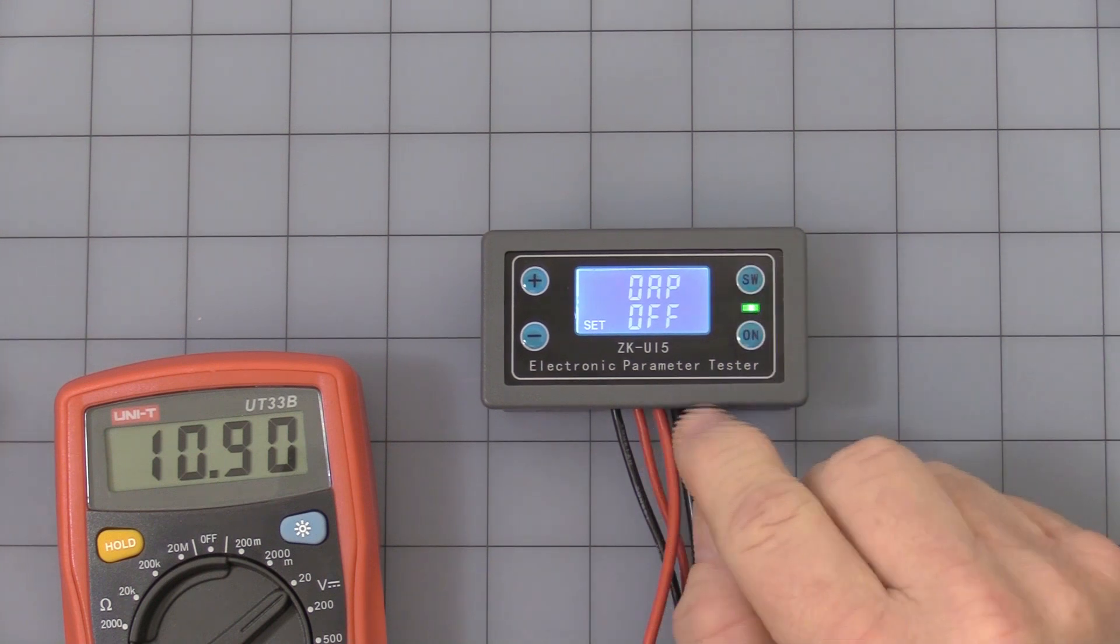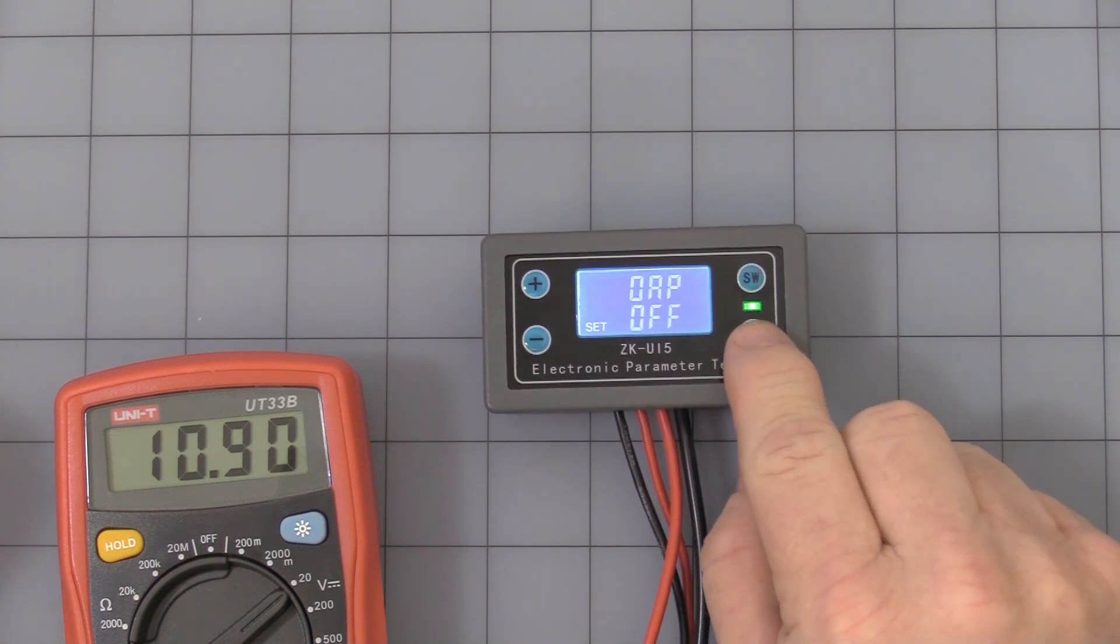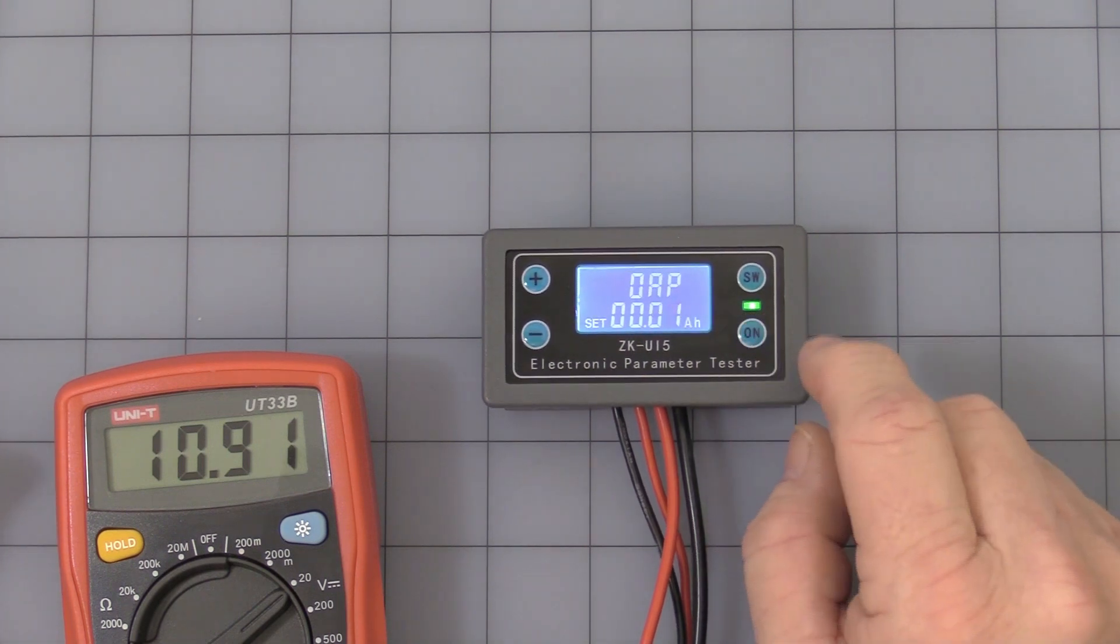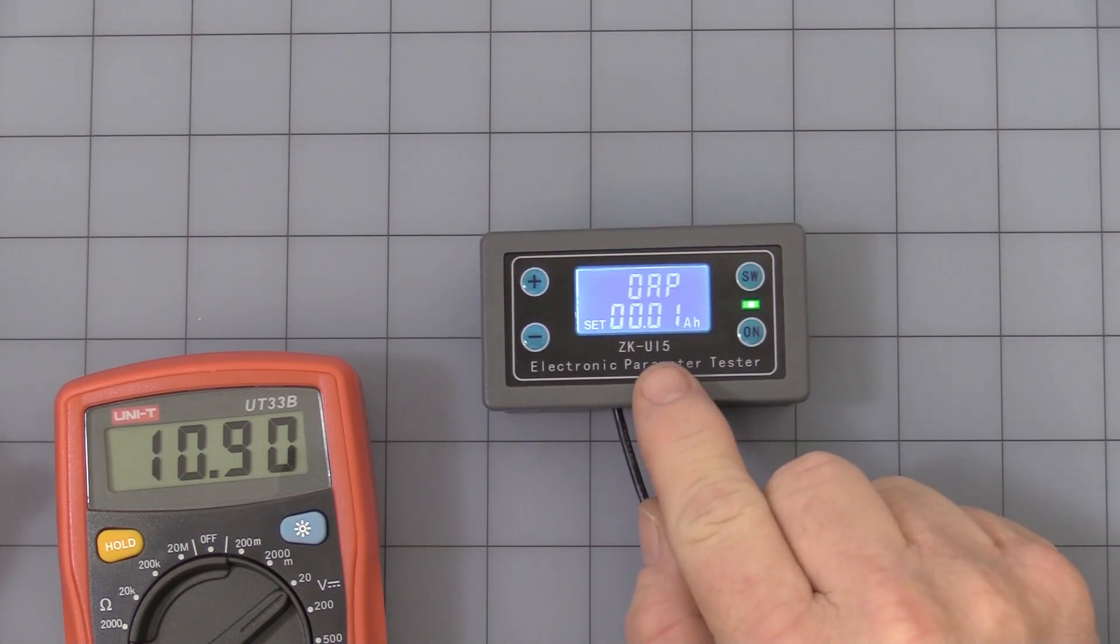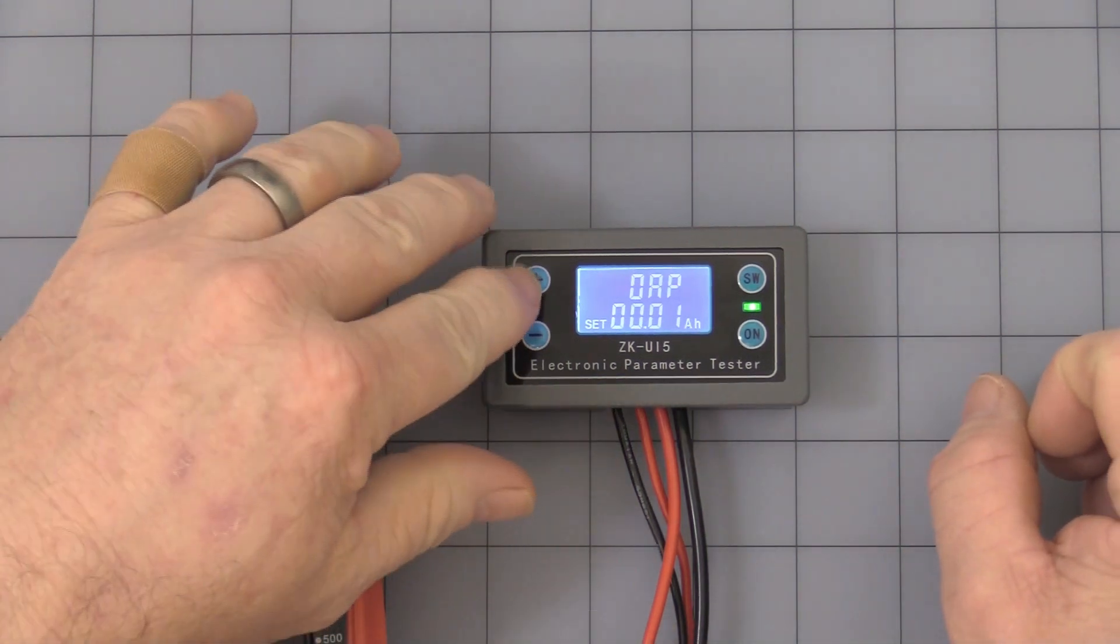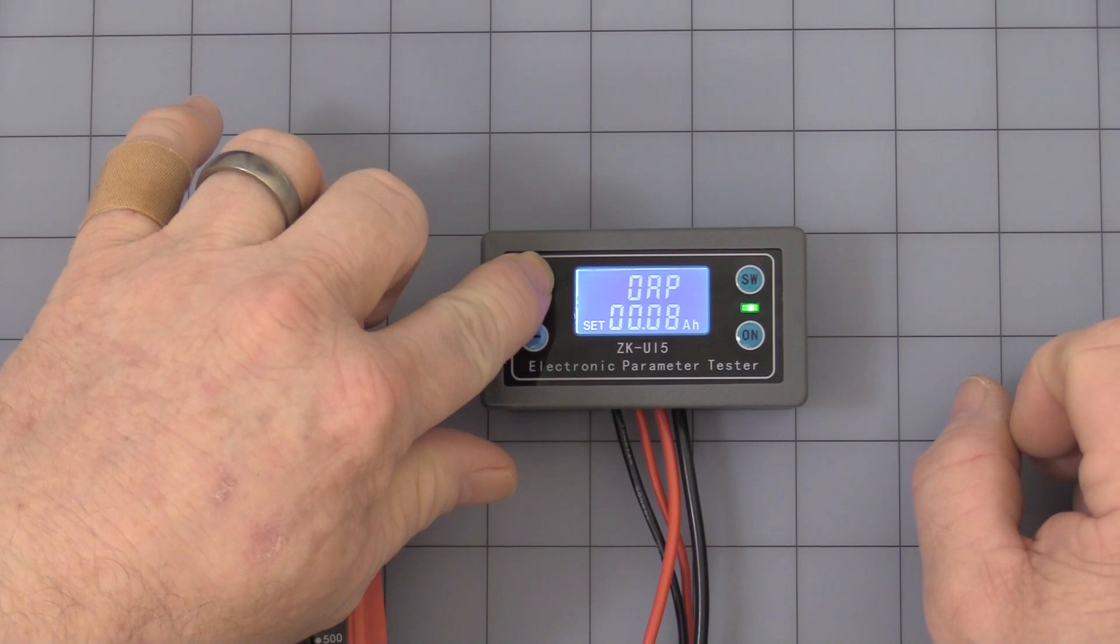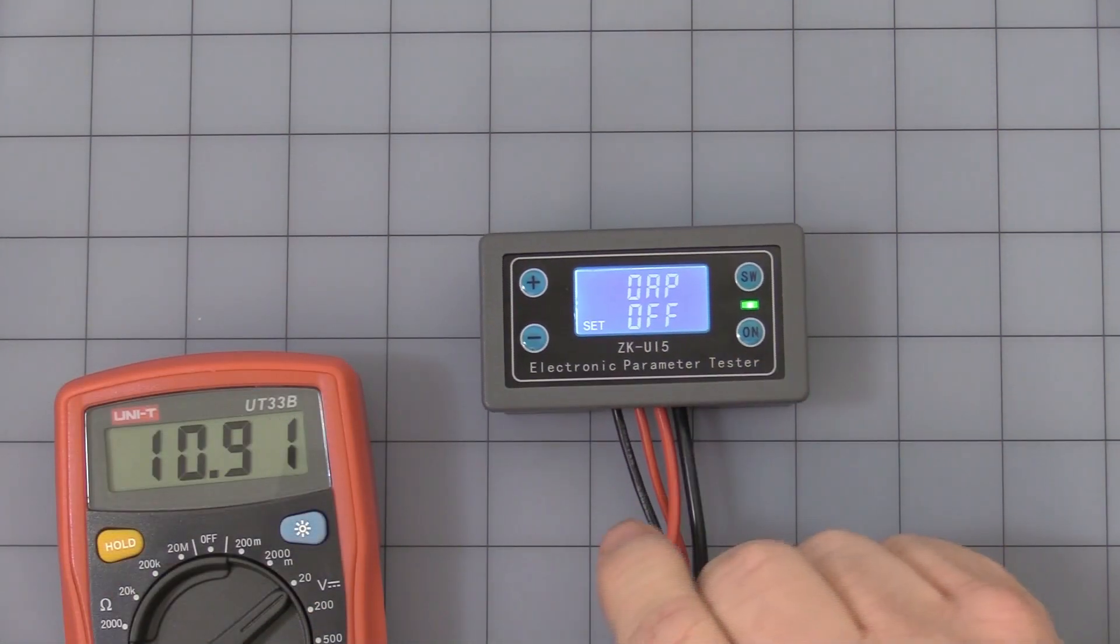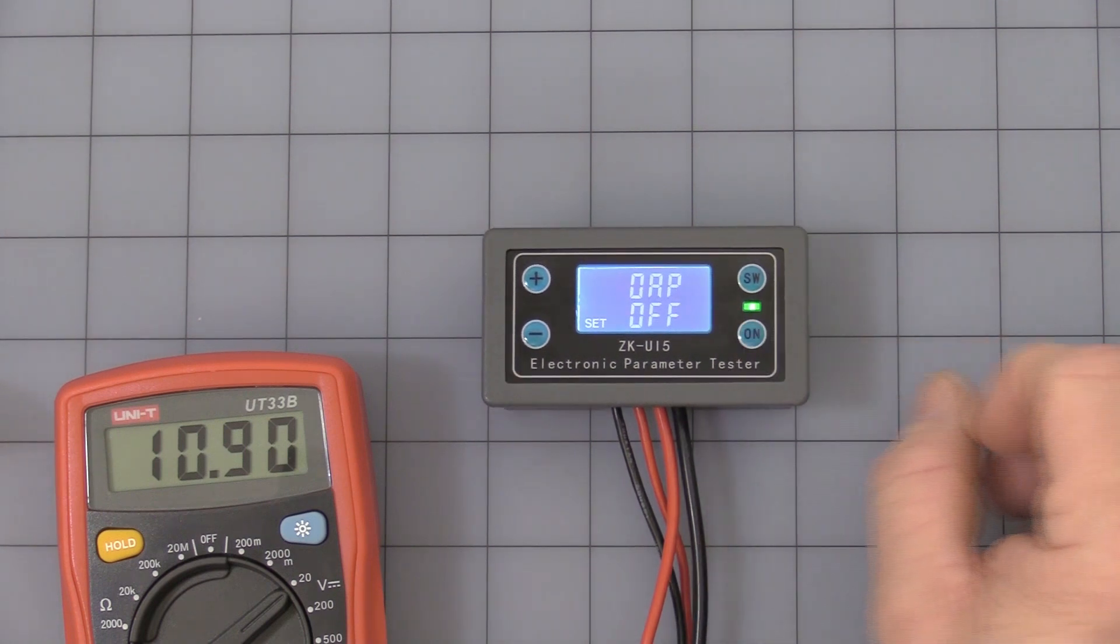Last but not least, is max discharge. It comes factory set off. Press the on button once and you see it has 0.01 milliamp hour resolution. Press and hold if you want to raise it, or just hit the on button again to turn it off.